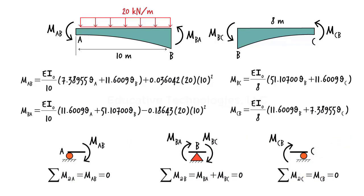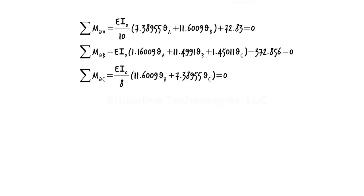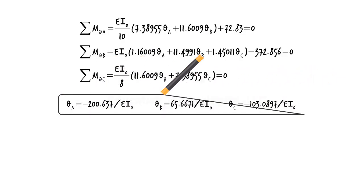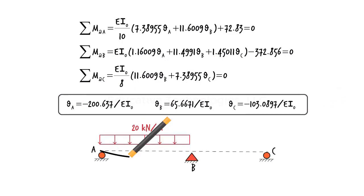In the expanded form, the joint equilibrium equations are shown here. Solving them for the unknowns we get the end rotations. Knowing the end rotations, we now know the general deformed shape of the beam. It looks like this.